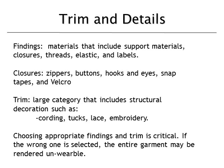It's important in the industry to use the correct terms. Findings are support materials: closures, threads, elastic, and labels. Within findings, closures are a large category including zippers, buttons, buttonholes, hooks and eyes, snaps, snap tapes, and Velcro. Trim refers to everything we've covered — cording, lace, embroidery, ribbon, and similar decorative elements.